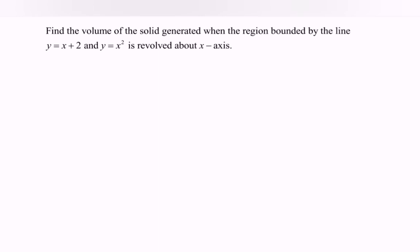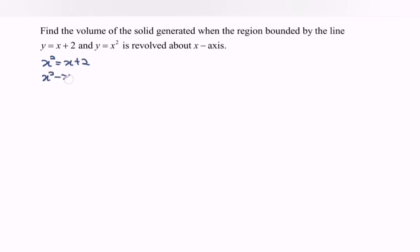First, find the points of intersection. We set x² equal to x + 2, giving x² minus x minus 2 equals 0. Factoring the equation, we have (x − 2)(x + 1) = 0, so they intersect at x = 2 and x = −1.